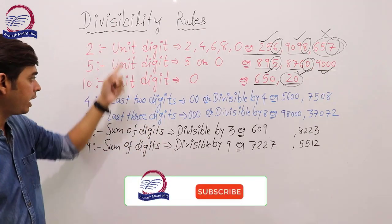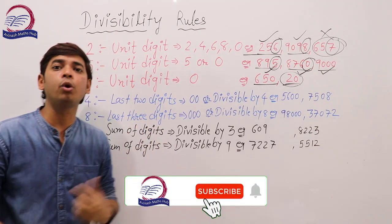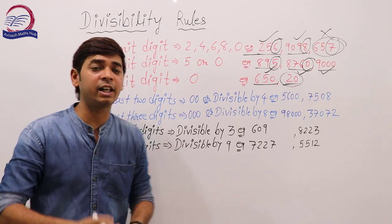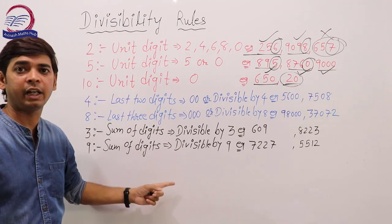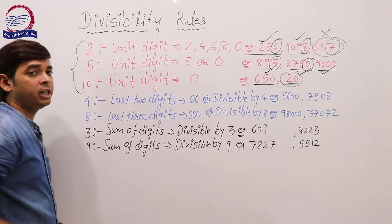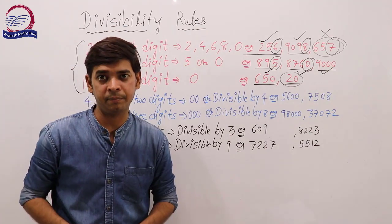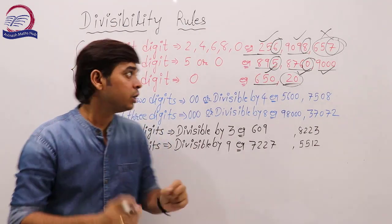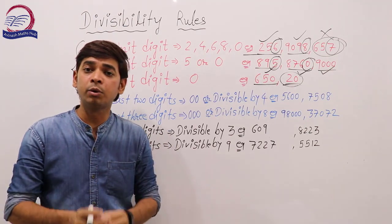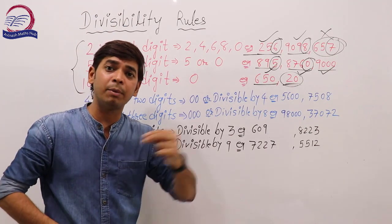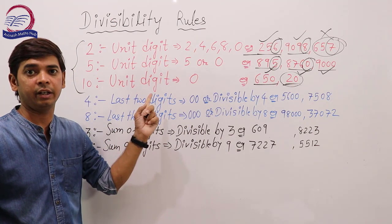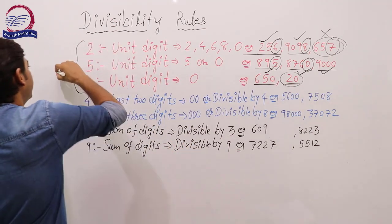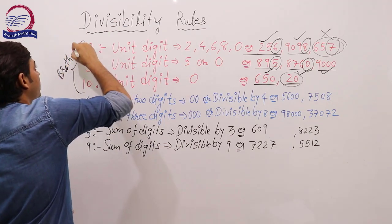Now you can see these form a group. We will call this group 'Brothers.' The Brothers — 2, 5, and 10 — are the numbers where we only check the unit digit. This is easy to remember because they all belong to the same group.